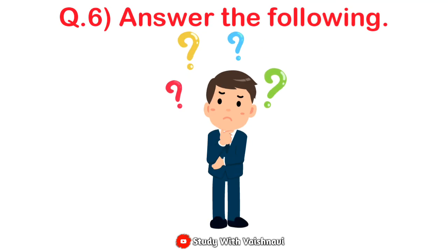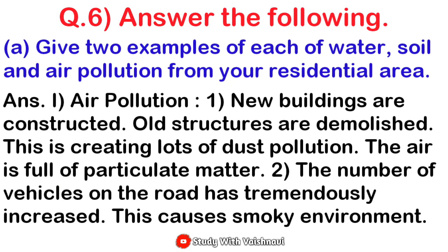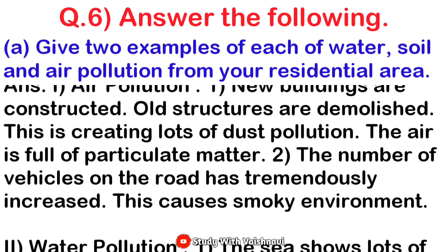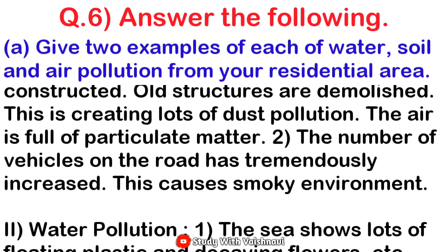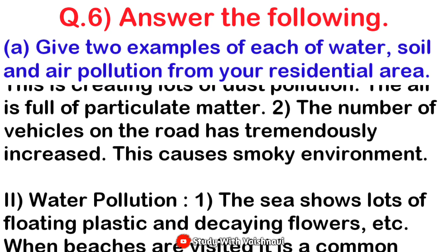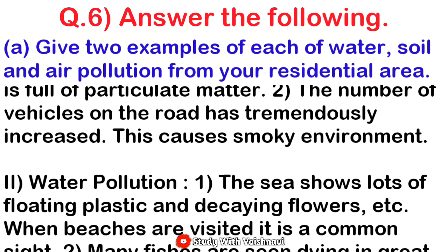Question number six: observe the following. Give two examples of each — soil, water, and air pollution — from your residence area. For air pollution: first example — new building construction or demolition creates lots of dust pollution with particulate matter. Second example — the number of vehicles on the road has increased, causing a smoky environment.